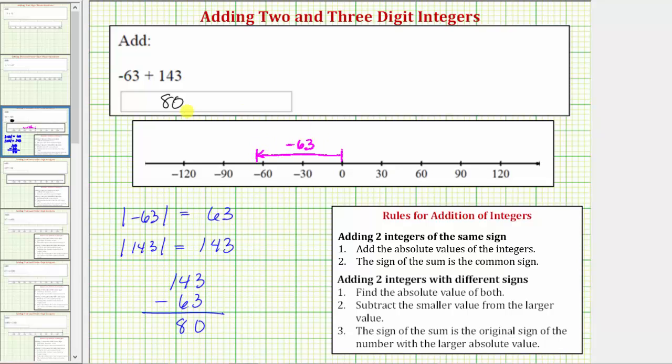And then from here, because we're adding positive 143, we would move right 143 units to positive 80.